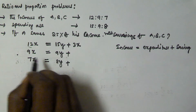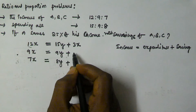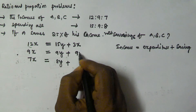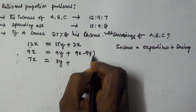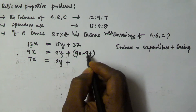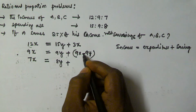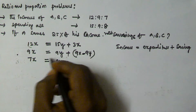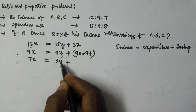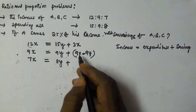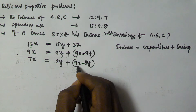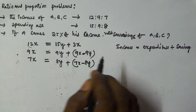A's income is 12x, his expenditure is 15y, and his saving is 3x. B's saving equals income minus expenditure, which is 9x minus 9y. C's saving equals 7x minus 8y.